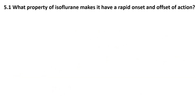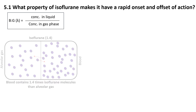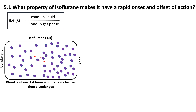What property of isoflurane makes it have a rapid onset and offset of action? The speed at which an inhaled anesthetic works depends largely on its blood solubility, measured by the blood-gas partition coefficient — defined as the ratio of the concentration of the anesthetic in blood to the concentration in the gas phase when the two phases are in equilibrium. Isoflurane has a low blood-gas coefficient of 1.4, meaning it does not dissolve easily in blood and stays in the gas phase. Because it stays mostly in the gas phase, it quickly moves from the lungs into the bloodstream and then to the brain, allowing fast induction.